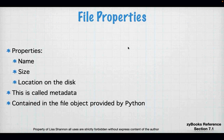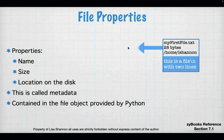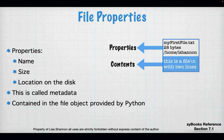What are the file properties? File properties or metadata include the name, the size, and the location on disk — contained in something called a file descriptor in Python. For example, I have a file called 'My First File,' it's 28 bytes, and it's in /home/lshannon. Those are the properties — the data about the file. And then there's the contents of the file, which just says 'this is a file with two lines.'